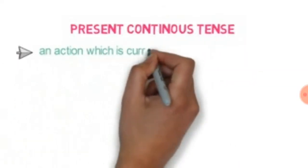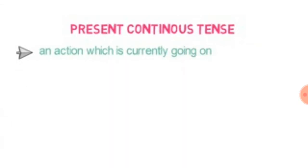If you like the video, please share and subscribe. So guys, now we will learn from the continuous tense. Present continuous: an action which is currently going on, an action which is currently going on.